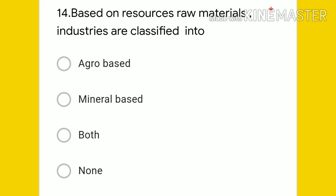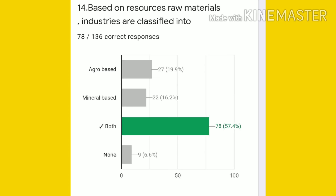Question 14: based on sources of raw materials, industries are classified into — agro, mineral, both, or none? The answer is both, meaning on the basis of sources of raw material there are agro-based industries and mineral-based industries. 78 students gave the right answer.